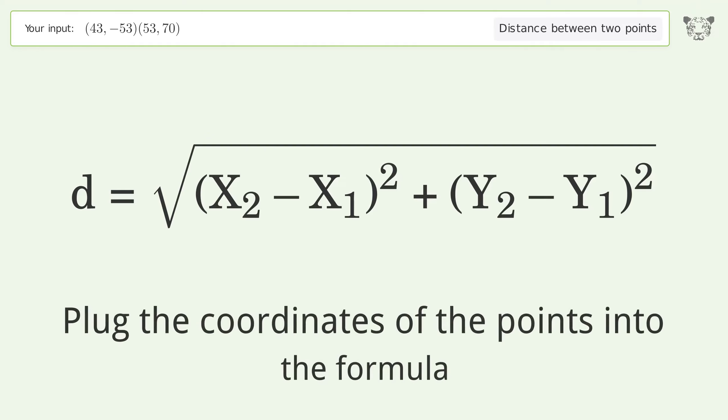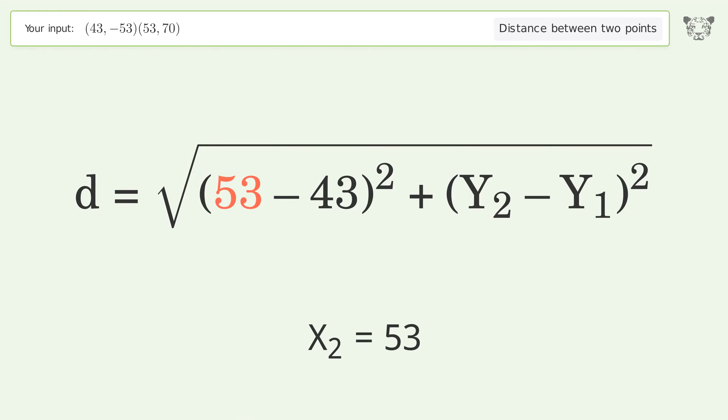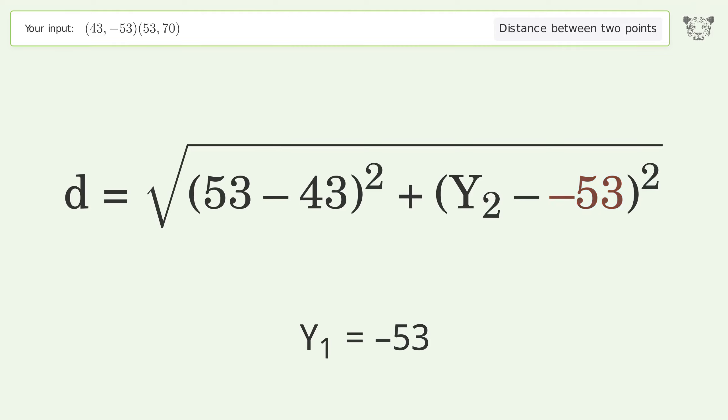Plug the coordinates of the points into the formula. x1 equals 43, x2 equals 53, y1 equals negative 53, y2 equals 70.